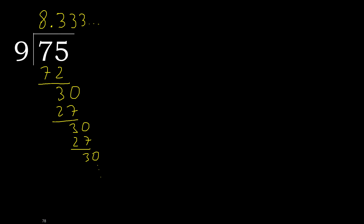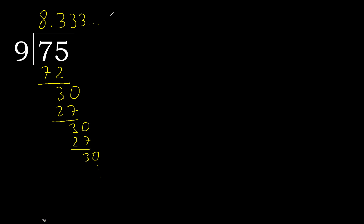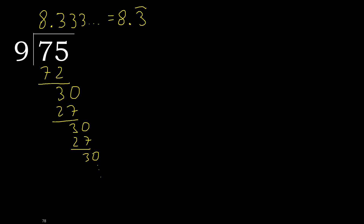75 divided by 9 is here: 8 point — after the point, 3 repeat. Repeat. Therefore like this — okay, equal. Okay.